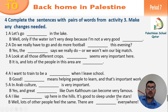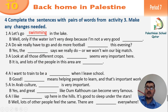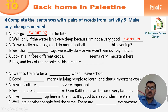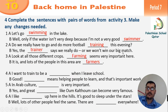Now complete the exercise with pairs of words from Activity 3. Make any changes needed. Number one: Let's go swimming in the lake. Well, only if the water isn't very deep, because I'm not a very good swimmer. Number two: Do we really have to go and do more football this evening? Yes, the trainer says we really do or we won't win our big match. Number three: Look at all those different crops — farming seems very important here.